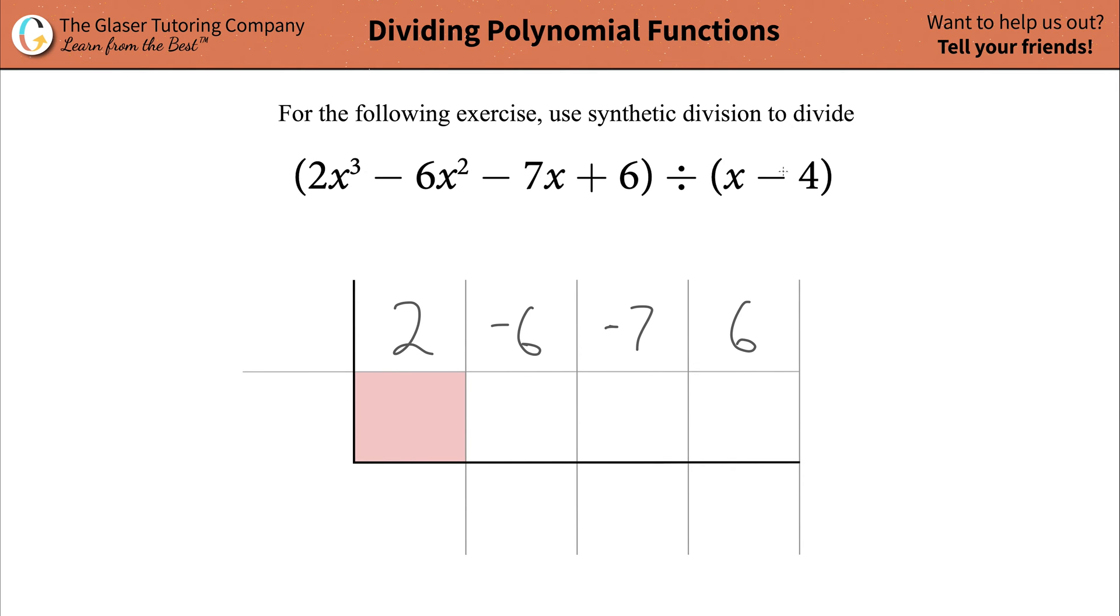What that means is you want to find x, the value of x that makes this particular function equal to 0. So you can set that up as a simple math equation: x minus 4 equals 0. If you solve that for x, it's simply going to be equal to positive 4. This number now is going to represent the value you're going to plug in here, positive 4.